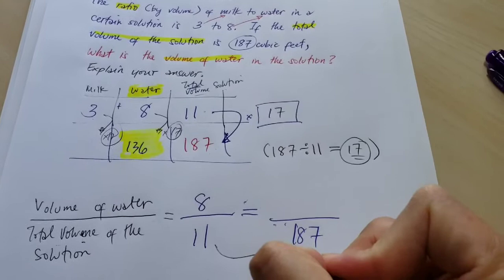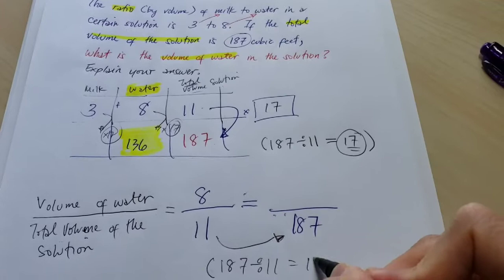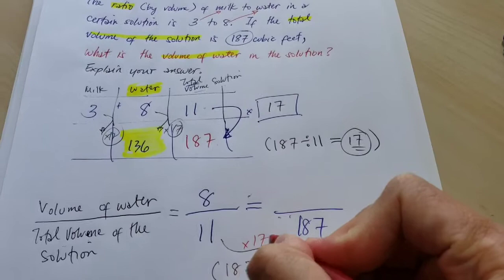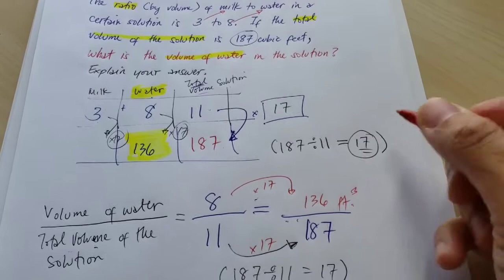Now the same thing. What did you multiply to 11 to get 187? So use whatever information you have to do inverse operations so you can get the factor which is 17. Now multiply 11 by 17 and you do the same for your volume of water quantity times 17 and that gives you 136 cubic feet. So we still get the same answer.